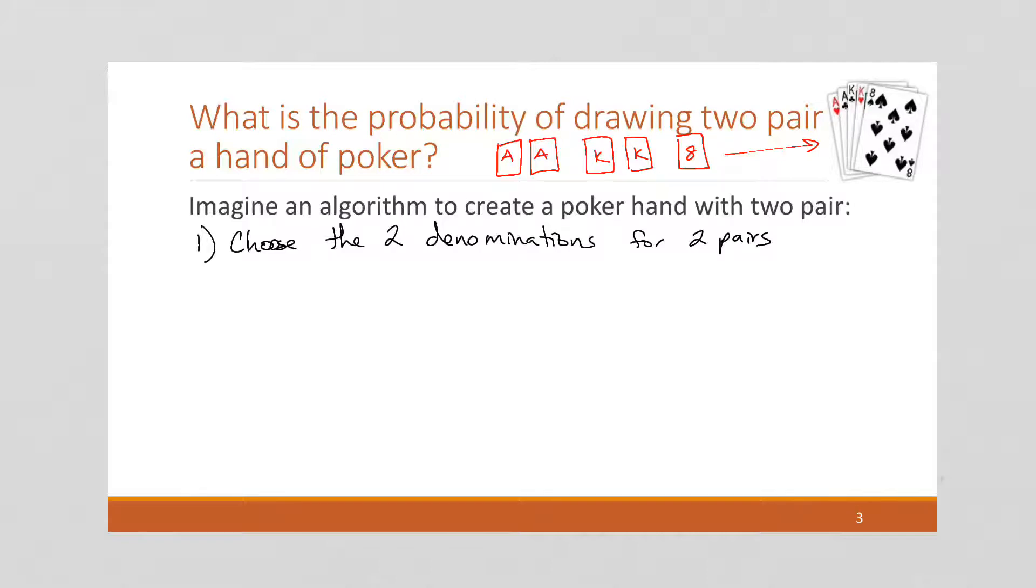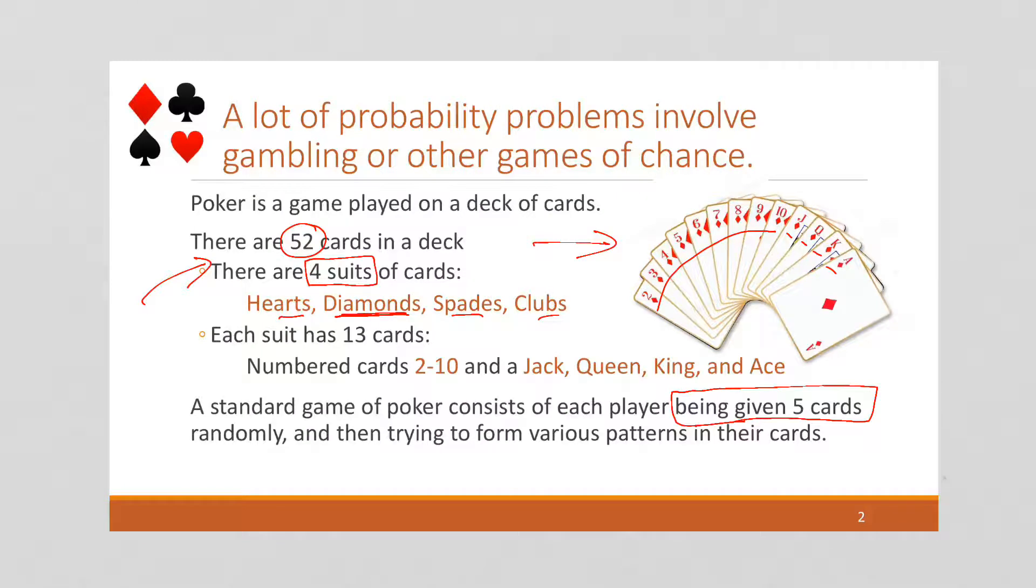We're going to have to pick two denominations for our two pair. Once we've figured out our denominations, ace and king in this example, we have to choose two cards from it. For every number, so if I pick tens, there's going to be four tens, because there's going to be one for each of these different suits. So there's going to be four tens, four aces, four kings, four fives, and so on.